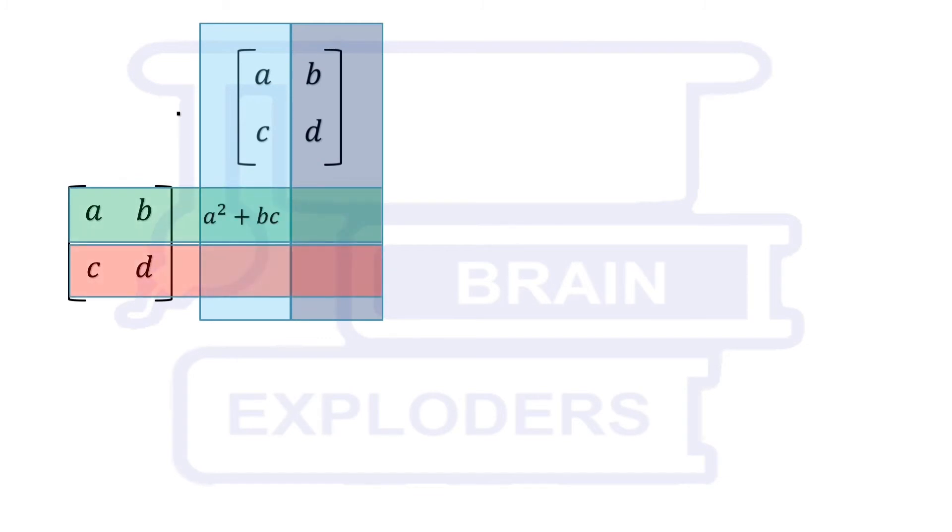Now multiply them accordingly. The square of this matrix contains elements A² plus BC, AB plus BD, CA plus CD, and CB plus D².